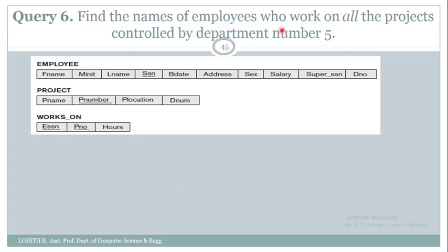Let us solve this query: find the names of employees who work on all the projects controlled by department number five. We have the 'on all' phrase, which means we use a division operation. The denominator is the project numbers controlled by department number five. The numerator is the ESSN of all employees and their project numbers. To get the project numbers controlled by department five, from the project table I select tuples where department number equals five using sigma, then select the project number column using pi, rename project number as p_number using rho, and store it as an intermediate relation.